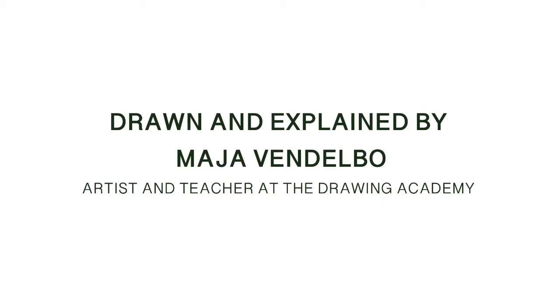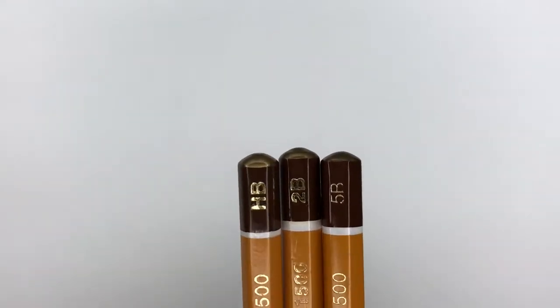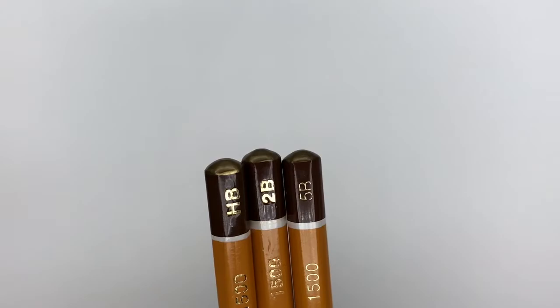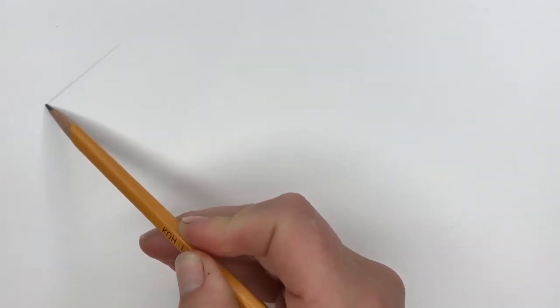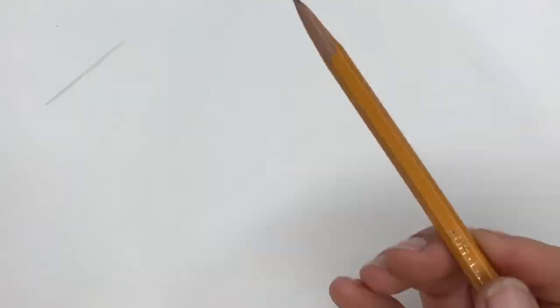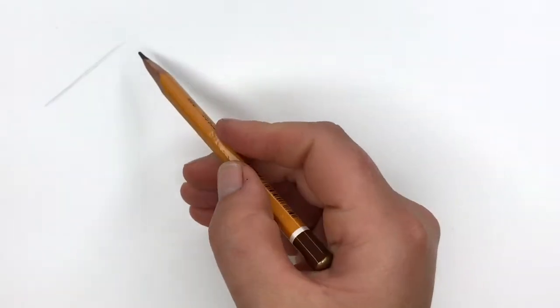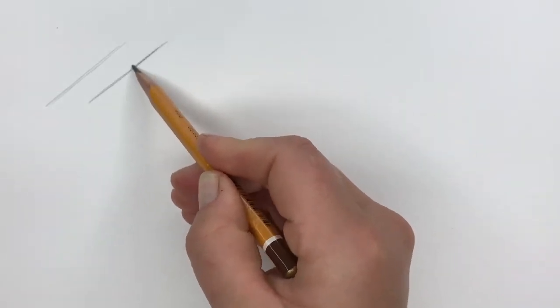So I will be using three different kinds of graphite pencils: the HB, the 2B, and the 5B. If you have something close to that, similar to that, that is absolutely fine. So the HB is sharper and lighter.